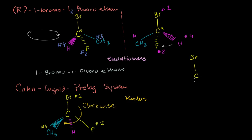If we redraw this molecule, you have your carbon still. You still have your bromine sitting on top, but we're going to put the hydrogen now to the back — so the hydrogen is now where the fluorine used to be. This methyl group, this carbon with the three hydrogens, is going to be rotated to where the hydrogen used to be. It's now going to pop out of the page.